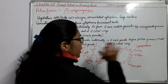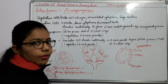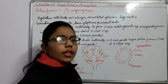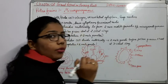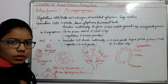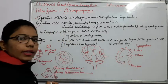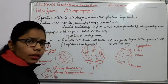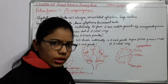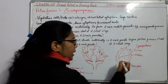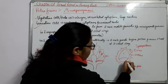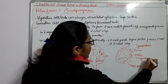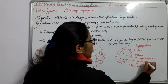Now what is happening in this pollen grain? This pollen grain divides itself and forms two cells: the vegetative cell and the generative cell. The bigger one is known as the vegetative cell and the smaller one is known as the generative cell. This is known as the two-cell stage.